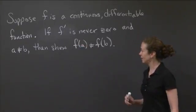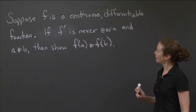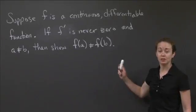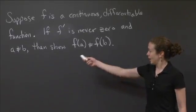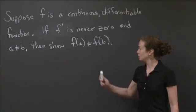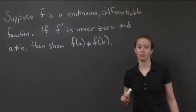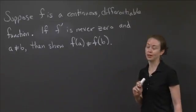Okay, our objective again is to show: if f is continuous and differentiable, and its derivative is never zero, and you're looking at two x-values that are different, show that their y-values have to be different. Show that if the inputs are different, the outputs have to be different.